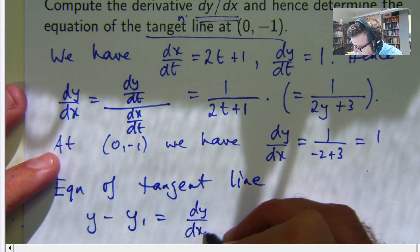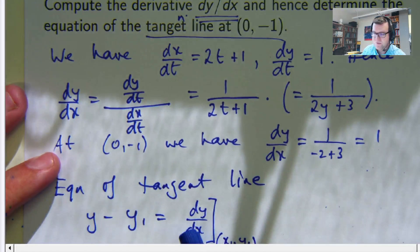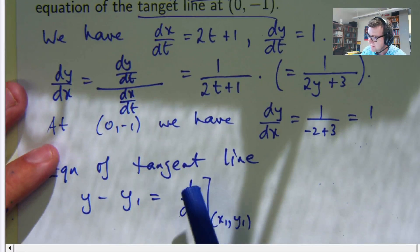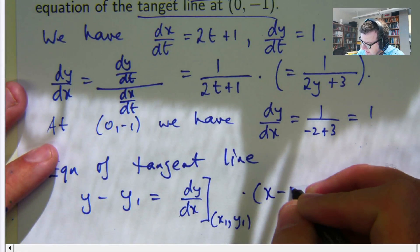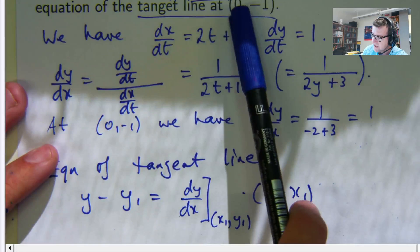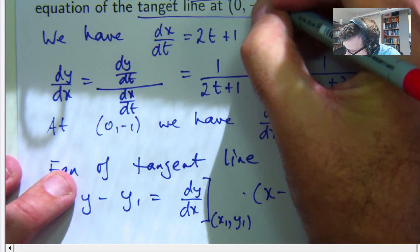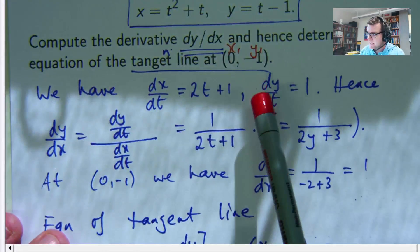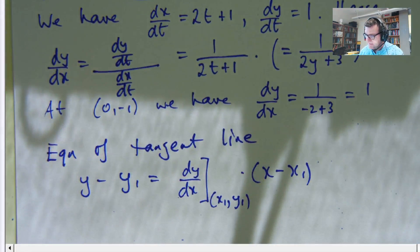So we know that the slope is the derivative. By this I mean I've got the derivative and I'm evaluating it at this point. So for us x1 is 0, y1 is negative 1. So let's put these in. This comes down here and I can finish my question.